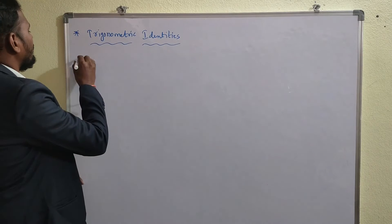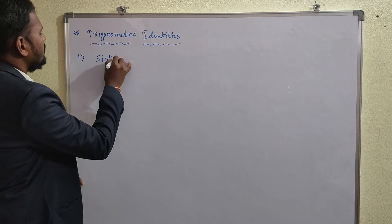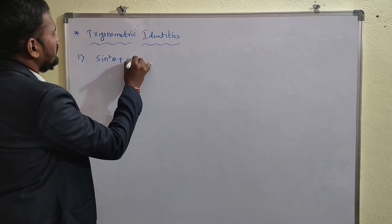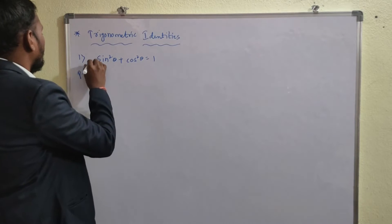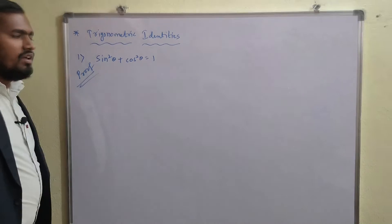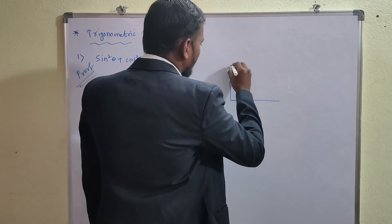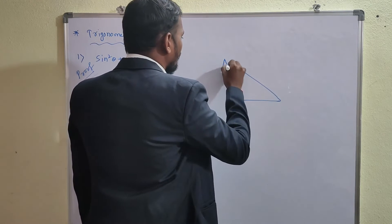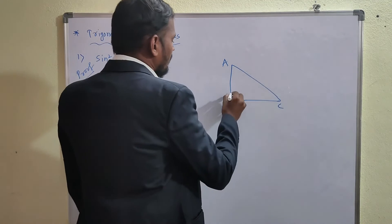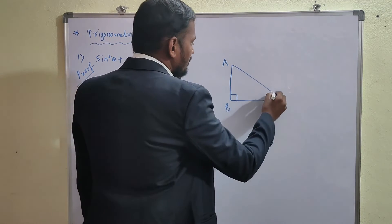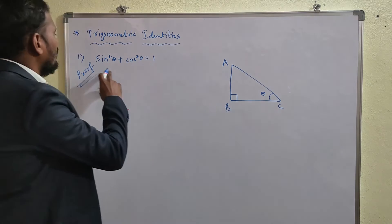Now let's do the proof of the trigonometric identity sin²θ + cos²θ = 1. First, draw a right-angle triangle ABC, with the right angle at C and angle theta at A.